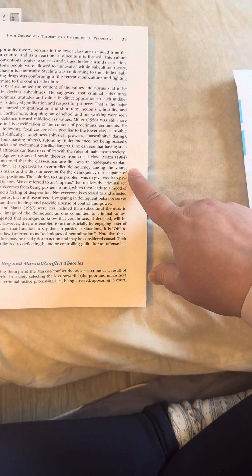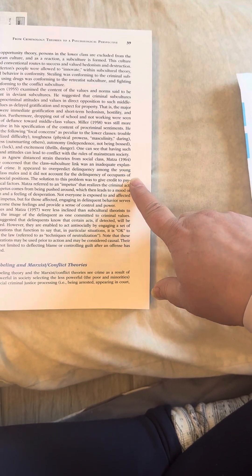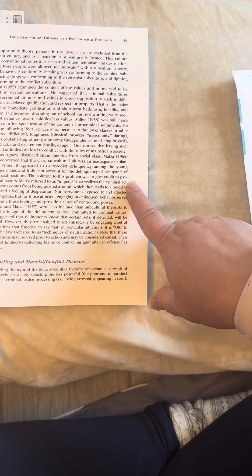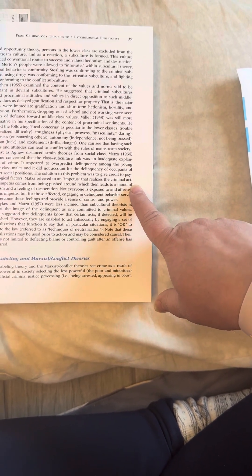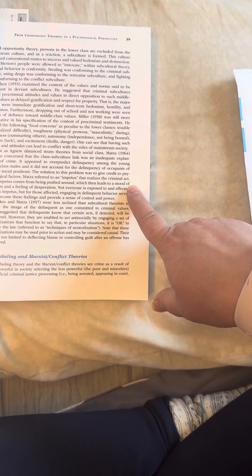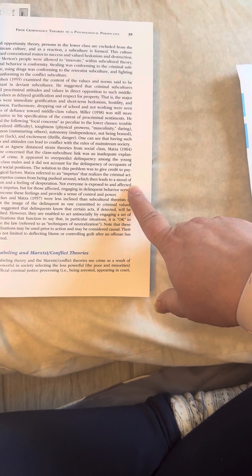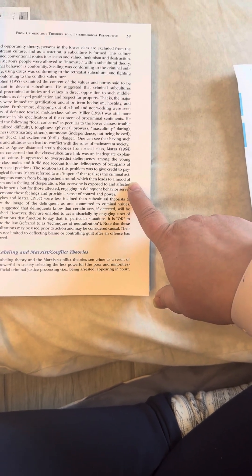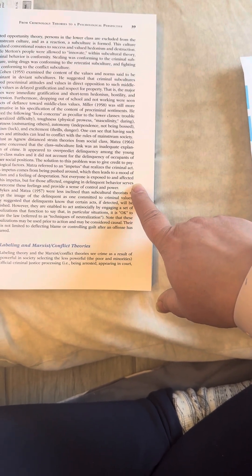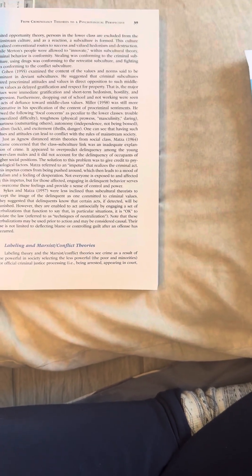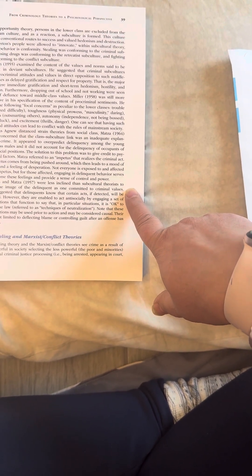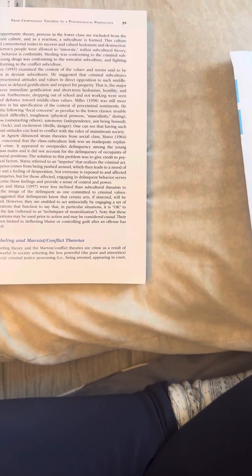Just as Agnew distanced strain theories from social class, Matza, 1964, became concerned that the class-subculture link was an inadequate explanation of crime. It appeared to over-predict delinquency among the young lower-class males, and it did not account for the delinquency of occupants of higher social positions. The solution to this problem was to give credit to psychological factors. Matza referred to an impetus that realizes the criminal act. The impetus comes from being pushed around, which then leads to a mood of fatalism and a feeling of desperation. Not everyone is exposed to and affected by this impetus, but for those affected, engaging in delinquent behavior serves to overcome these feelings and provide a sense of control and power.